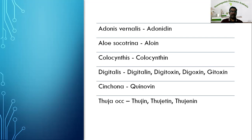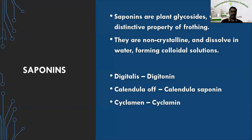Now let us see another phytoconstituent: saponins. Saponins are plant glycosides with the distinctive property of frothing. Saponins are not chemically different from glycosides but have the distinct property of frothing. Sometimes when you shake a herbal extract or mother tincture, there is formation of froth, and this formation of froth is due to the saponin content. They are non-crystalline and dissolve in water forming a colloidal solution, which we see as froth.